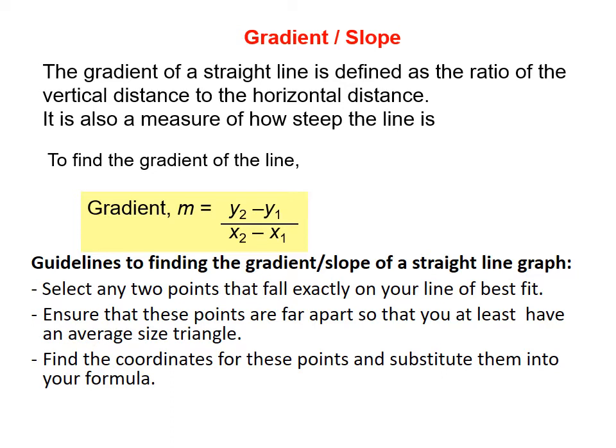So your vertical distance would be the distance on your y-axis and the horizontal distance would be the distance on your x-axis. So that is why when we are calculating the gradient for a straight line graph, we are dividing the difference in the y-values by the difference in the x-values, because it is a rise divided by the run. So the gradient is equal to y2 minus y1 divided by x2 minus x1.